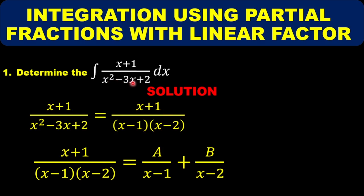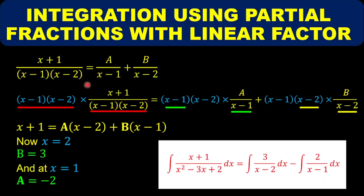Now that we are done with this, we want to express it as a partial fraction so we can solve. Remember it is a linear factor, so we give the first denominator a numerator of A and the second a numerator of B. We need to determine A and B before we can do the integration. So we have A over (x-1) plus B over (x-2).